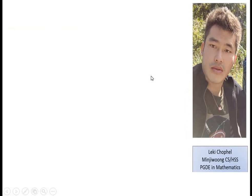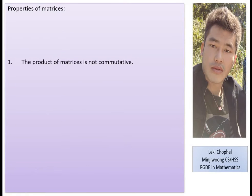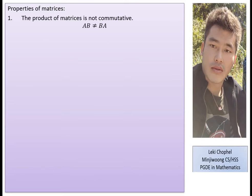The product of matrices is not commutative, meaning A×B is not equal to B×A. For example, whenever AB is defined, BA is not always defined. We cannot say that just because we can multiply A and B, we can also multiply B and A.